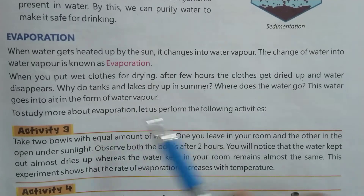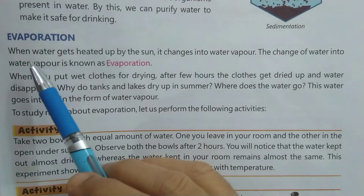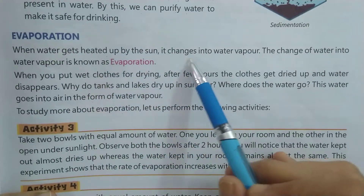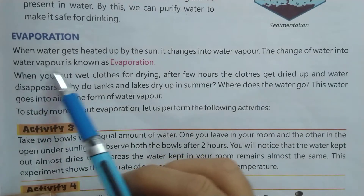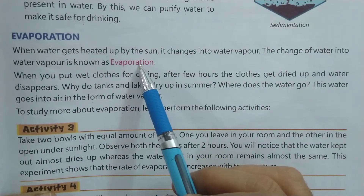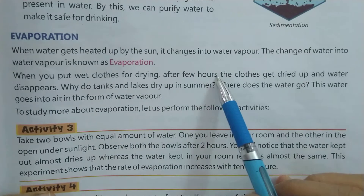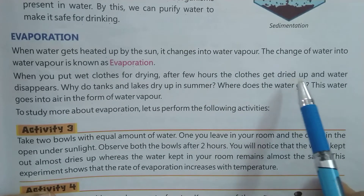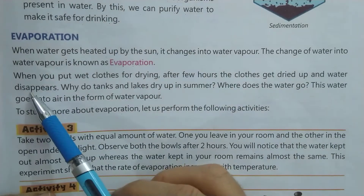Evaporation को समझते हैं — सूरज की गर्मी से पानी गर्म होता है तो वो water vapor में change हो जाता है। इसी water के water vapor में change होने की process को हम बोलते हैं evaporation। जब हम गीले कपड़े डालते हैं तो वे सूख जाते हैं कुछ घंटों बाद — उनका जो water है वो dry हो जाता है और सूख करके गायब हो जाता है।